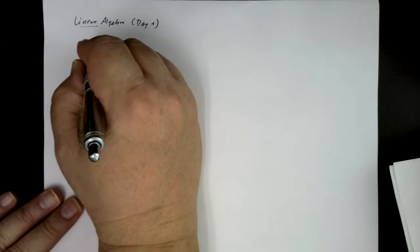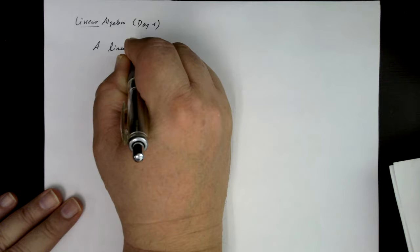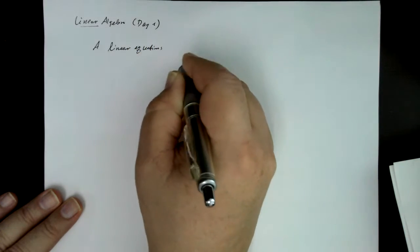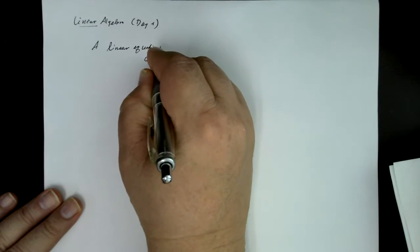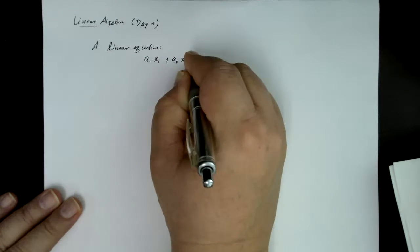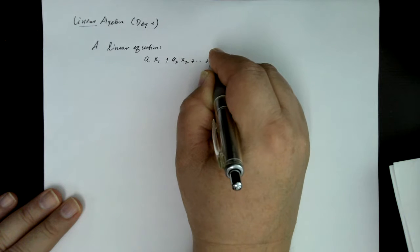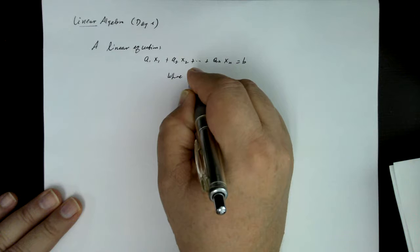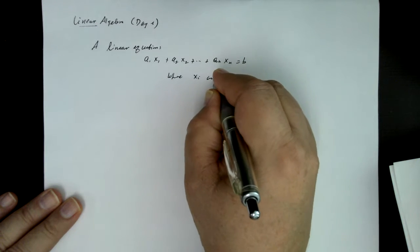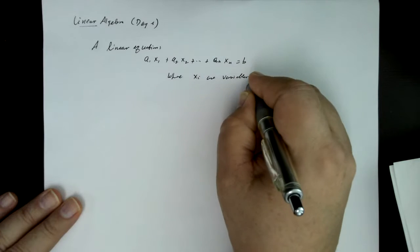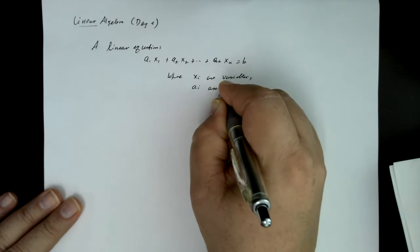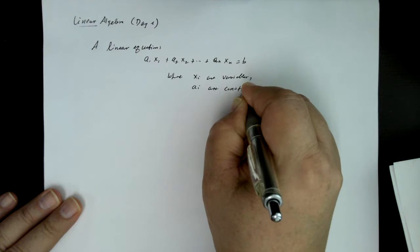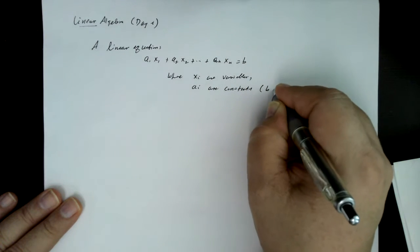So the first part is, what is the linear in linear algebra? We're going to define that more generally later, but for now, we'll just say a linear equation is an equation of the form a1x1 plus a2x2 plus anxn equals b, where the xi are the variables, and the ai are constants, as is b.